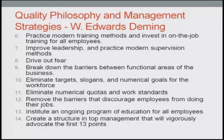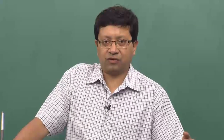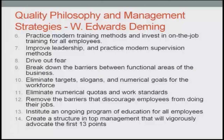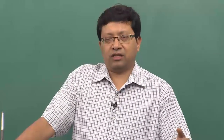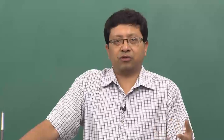The sixth point: practice modern training methods — train your employees, train your personnel, and invest in on-the-job training for employees such that they are able to utilize that training so that the benefits they provide to the overall process of manufacturing or services actually goes into the product when it is delivered. Seventh: improve leadership and practice modern supervision methods, so that the main person on the shop floor is able to train and inculcate the overall concepts onto his or her subordinates in such a way that they also ingrain the concepts of quality and continuous improvement in the process and products.